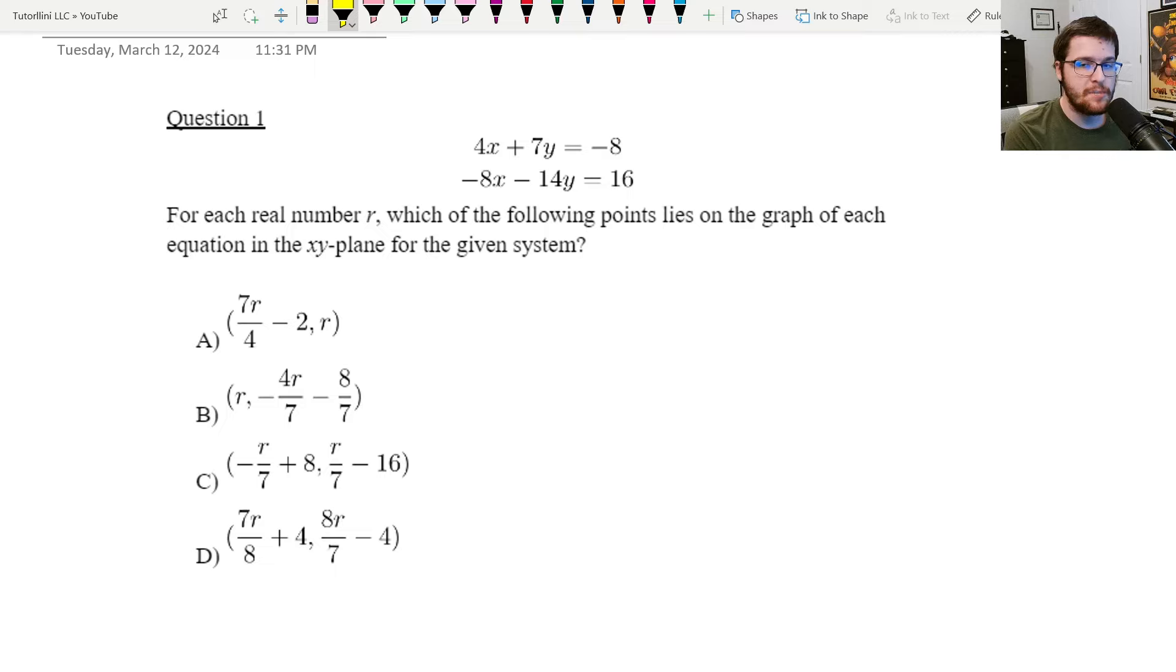Okay everybody, please pause this video and take a second to write this question down. Really, all we're going to be doing is typing everything we see here into Desmos. The only thing I want to point out is that it says which of the following points lies on the graph of each equation in the xy plane for each real number R. That means we're looking for a point that follows a path that would yield infinite solutions, infinitely many solutions. Let's jump to Desmos.